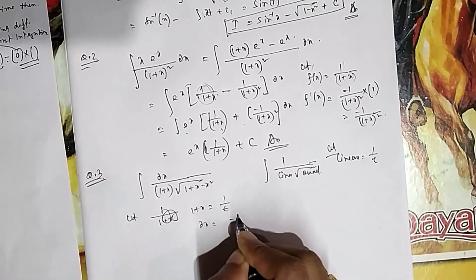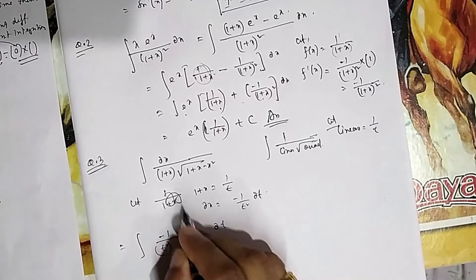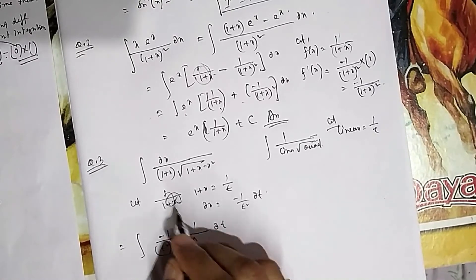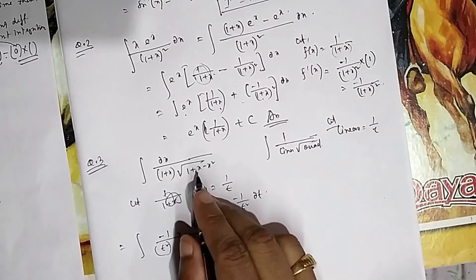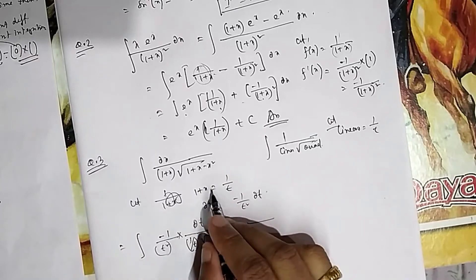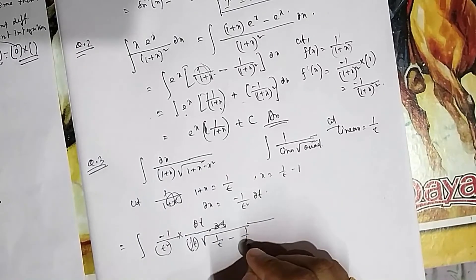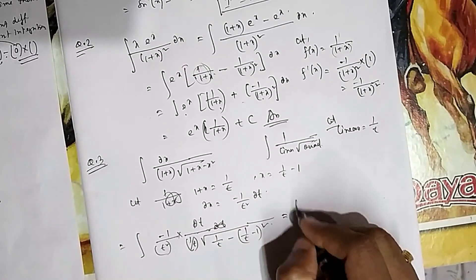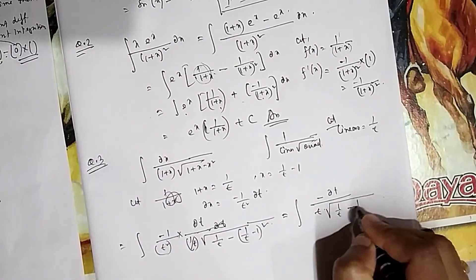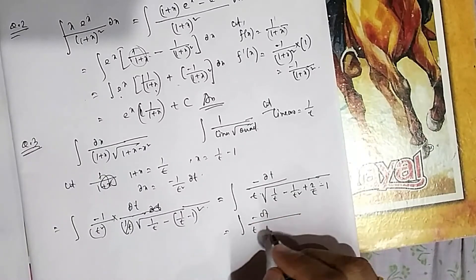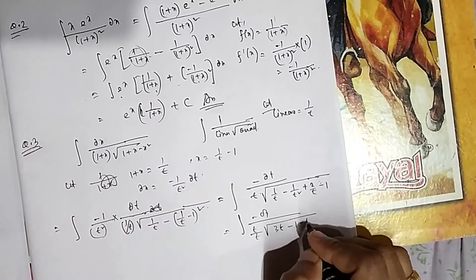Differentiating 1+x = 1/t gives dx = −(1/t²)dt. Also, x = 1/t − 1. Substituting dx and simplifying, 1/x = 1/(1/t − 1) = t/(1−t). After substitution and simplification, the expression under the square root becomes 2t + 1 − 3t² (or similar) — simplify to get an expression in t.